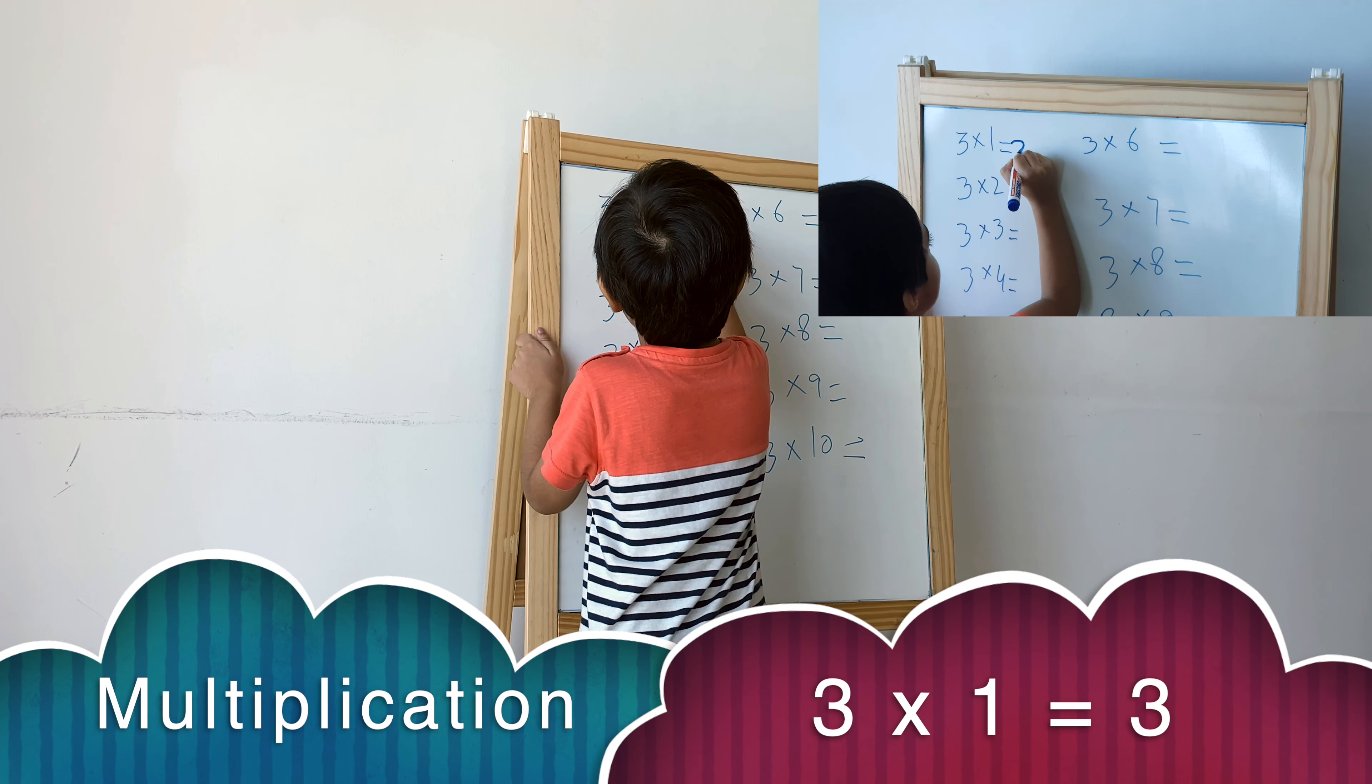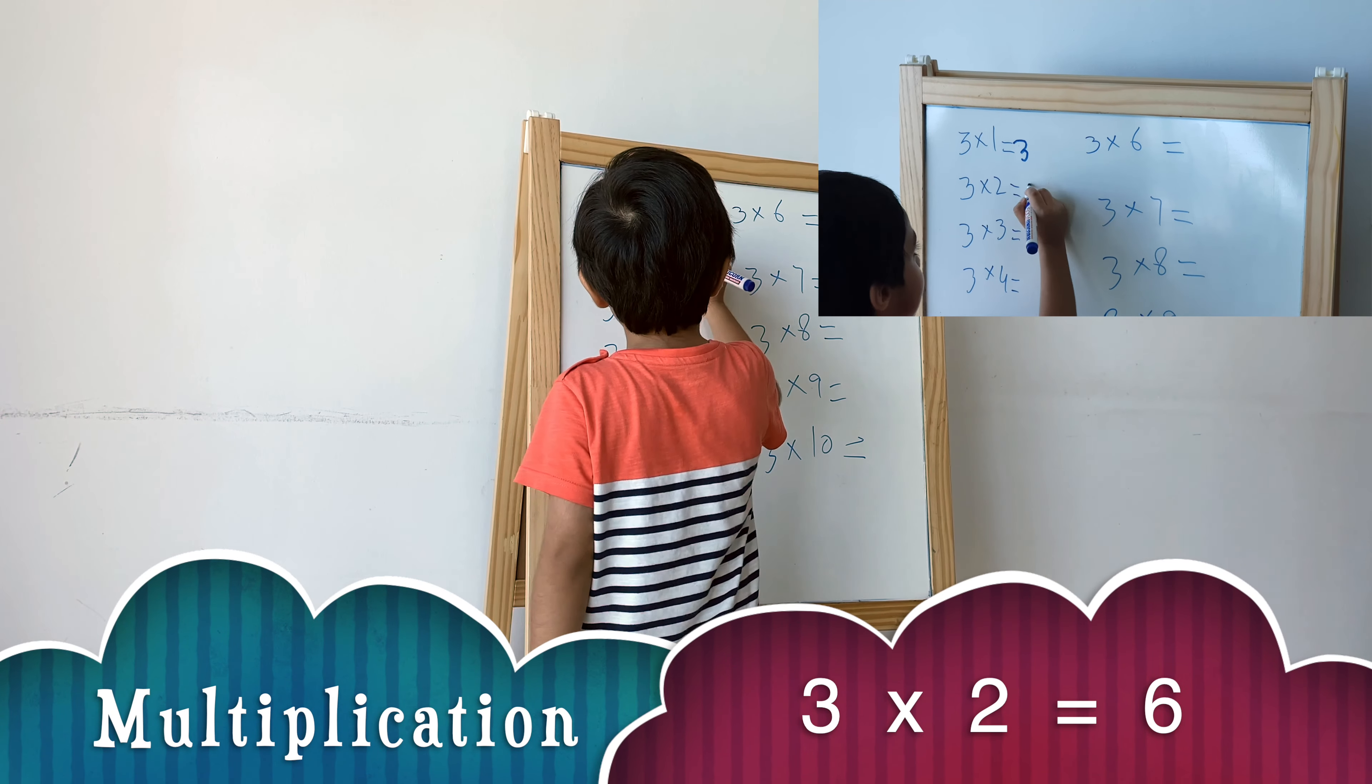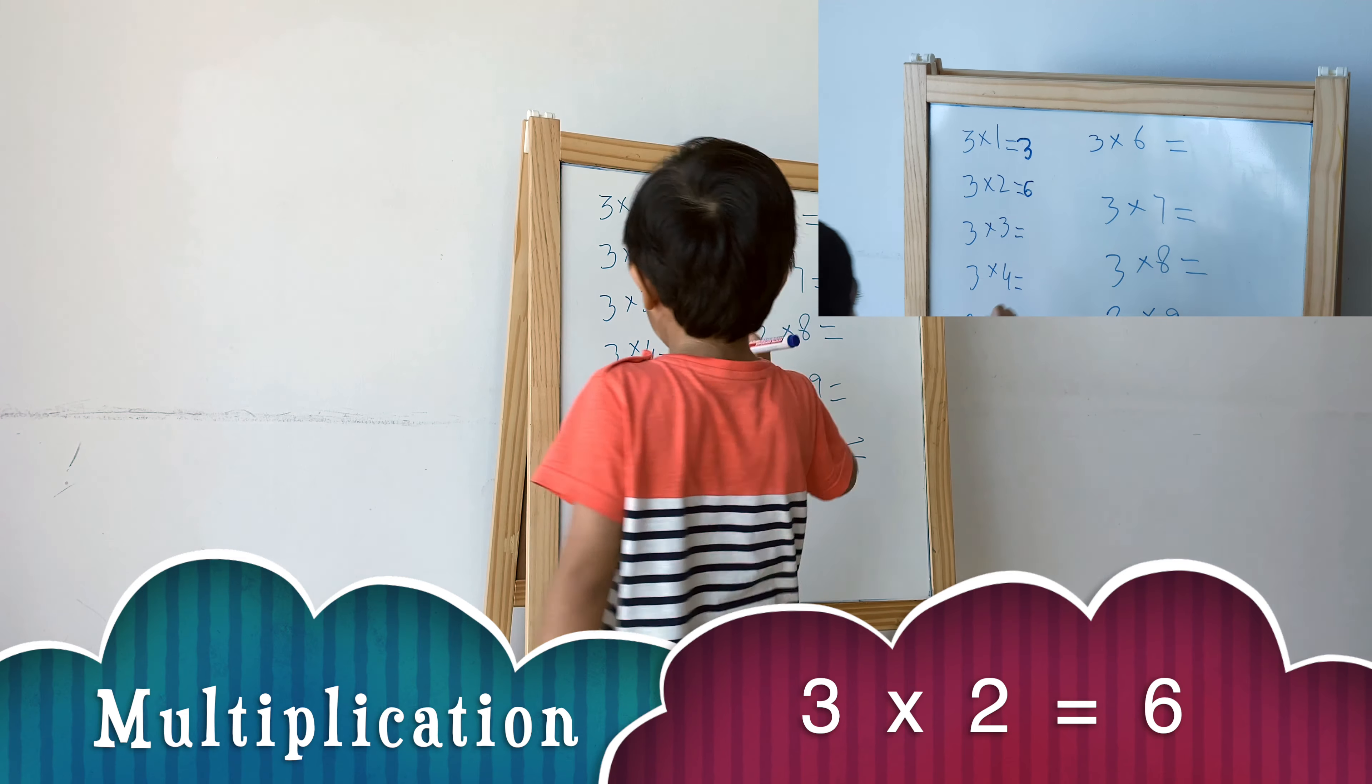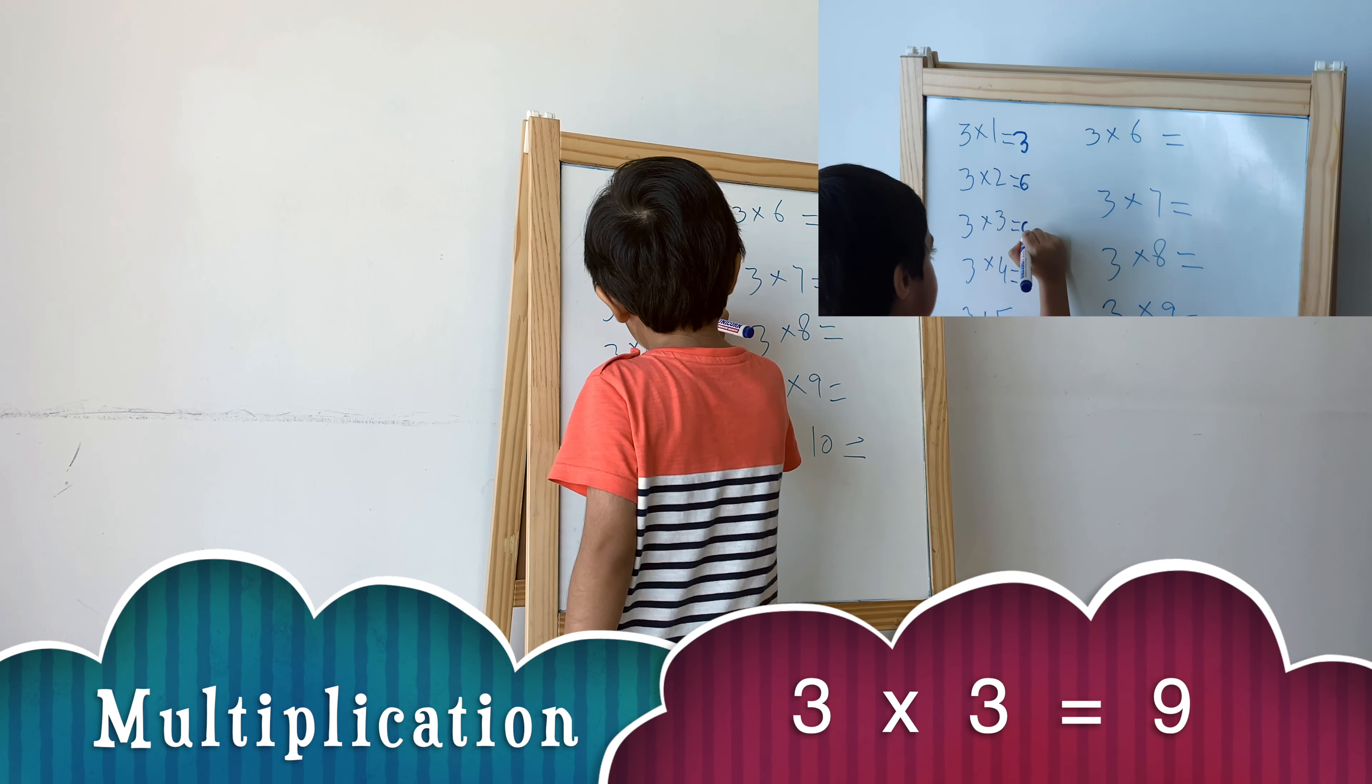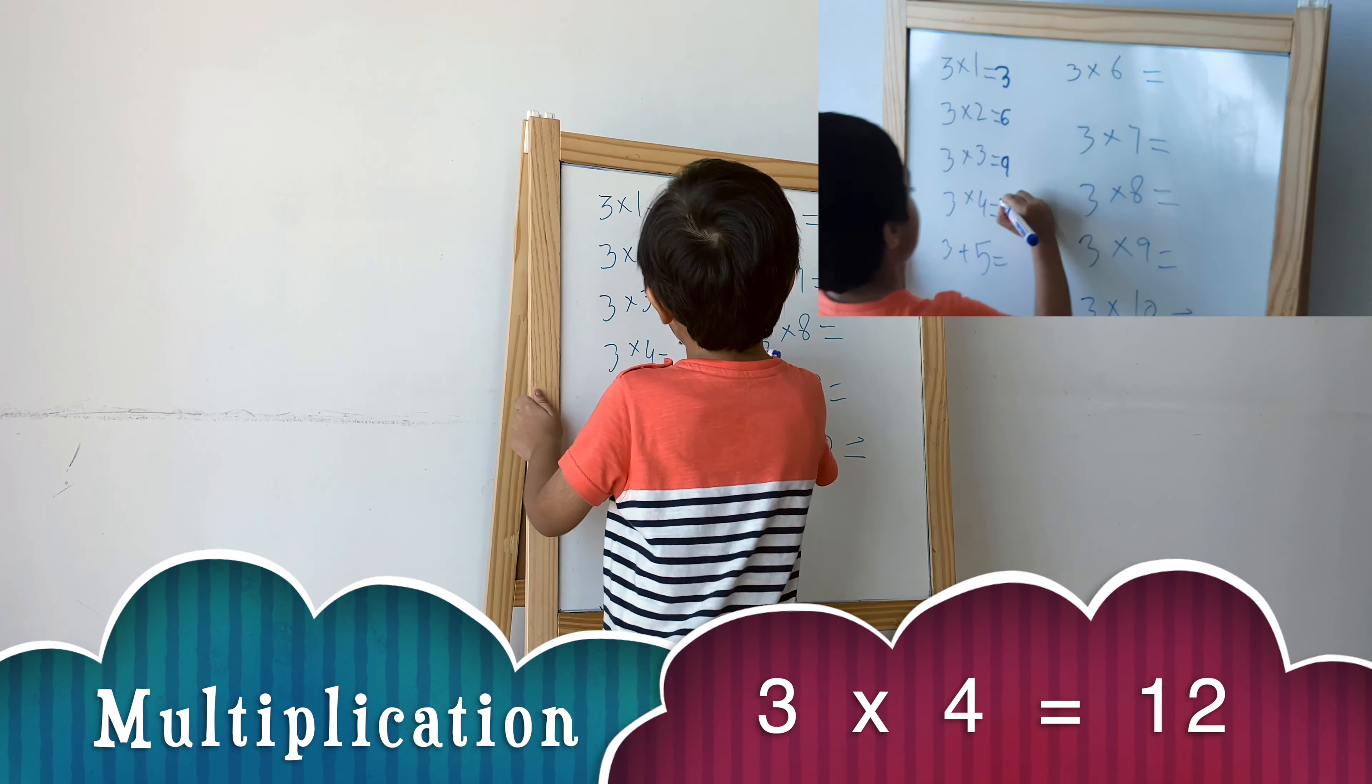3 multiplied by 1 equals 3. 3 multiplied by 2 equals 6. 3 multiplied by 3 equals 9. 3 multiplied by 4 equals 12.